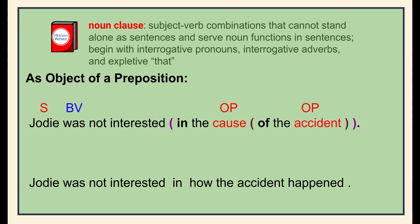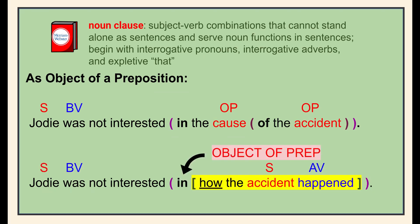In the first sentence, there are two prepositional phrases: 'in the cause' and 'of the accident.' It's important to be able to find prepositions, so review your list from unit one if needed. In the second sentence, there is a second subject-verb combination — 'accident happened' — introduced by the interrogative adverb 'how,' which makes the clause dependent. This dependent clause follows the preposition 'in,' so the noun clause is functioning as the object of the preposition.